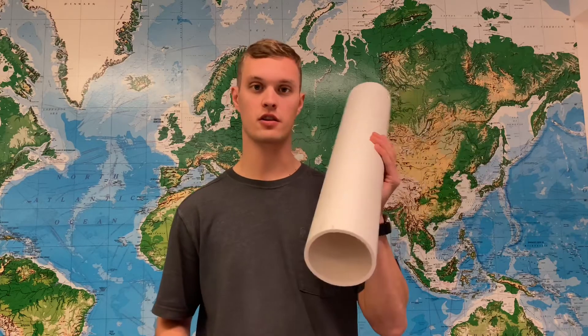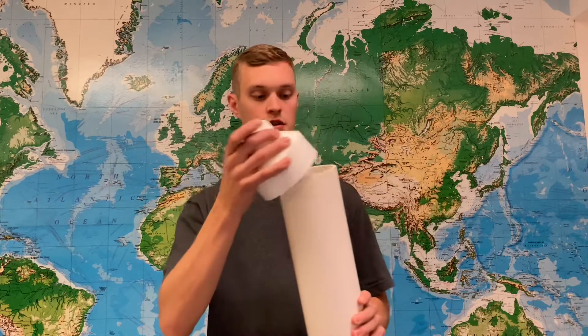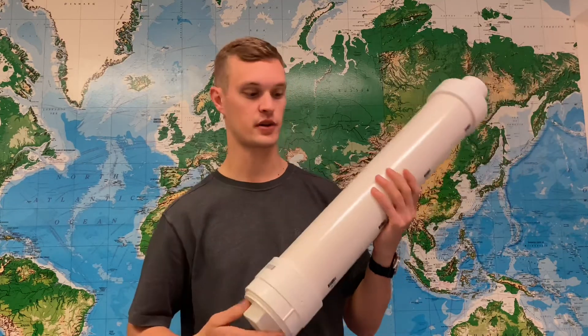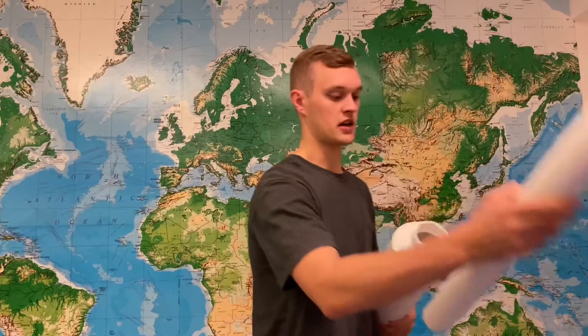So to build the potato gun, you want to take your combustion chamber, the 4-inch pipe, put the reducer on one end, and then the end cap on the other side. Go ahead and put that one on. And then the barrel just slides right on the top.